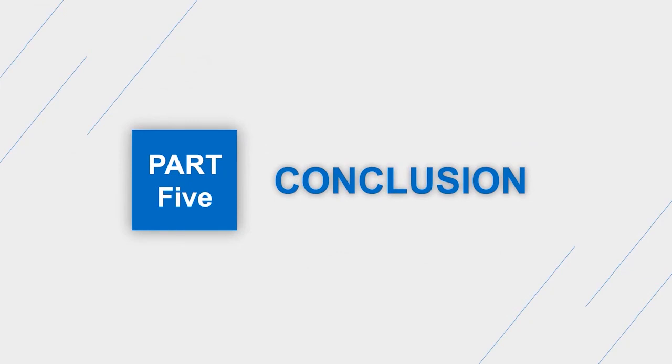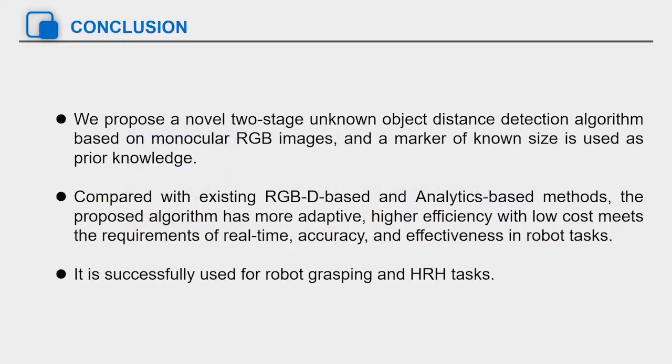Part 5 is the conclusion. We propose a novel two-stage unknown object distance detection algorithm based on monocular RGB images, and a marker of known size is used as prior knowledge.